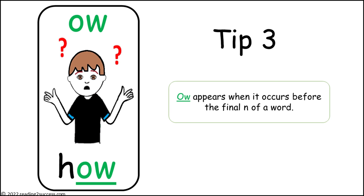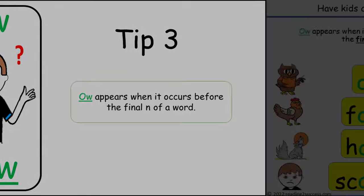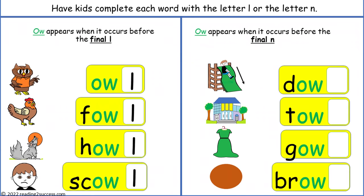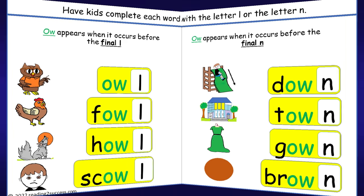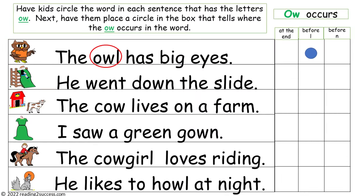Tip number three: O-W appears when it occurs before the final N of a word. Now in the second column, have kids place the final N in each word: 'down,' 'town,' 'gown,' and 'brown.' Now have kids circle the word in each sentence that has the letters O-W. Next, have them place a circle in the box that tells where the O-W occurs in the word.